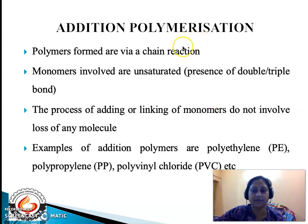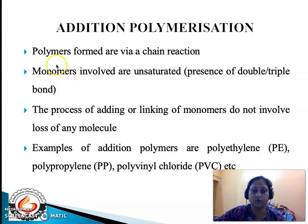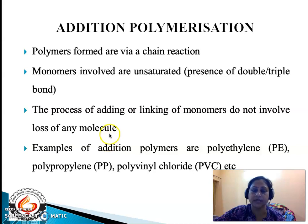As we have discussed in the previous lecture, addition polymerization is a process in which the polymers are formed via a chain reaction. The most important point is that the monomers involved are unsaturated — meaning there should be a presence of a double or a triple bond. This process of addition does not involve the loss of any molecules. Examples under this category are polyethylene, polypropylene, polystyrene, polyvinyl chloride, teflon, etc.